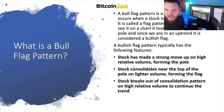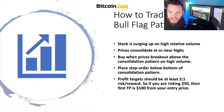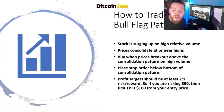Last, the stock breaks out of the consolidation pattern on high relative volume to continue the trend. So the stock moves up, consolidates near the top, then breaks out of that consolidation. When trading the bull flag: the stock surges up on high volume, prices consolidate at or near the highs, and then you enter a trade when prices break out above the consolidation pattern on high volume. You want to make sure there's volume at the same time as the breakout. Then place a stop order below the bottom of the consolidation pattern.